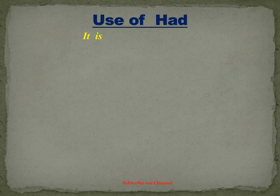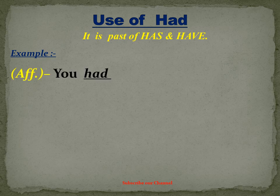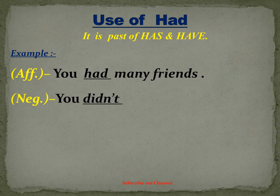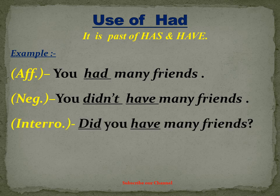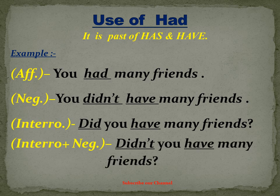यूज़ ऑफ हैड — हैड हमारा past होता है has और have का। Affirmative: You had many friends. Negative: You didn't have many friends — did लगाने के बाद have आता है क्योंकि did already second form है, तो did के बाद हमेशा first form आती है। Interrogative: Did you have many friends? Interrogative plus negative: Didn't you have many friends?